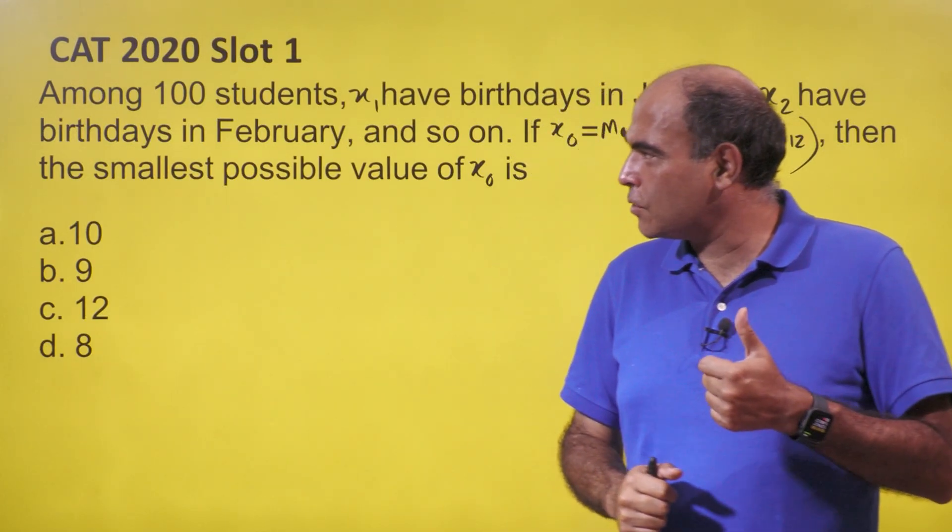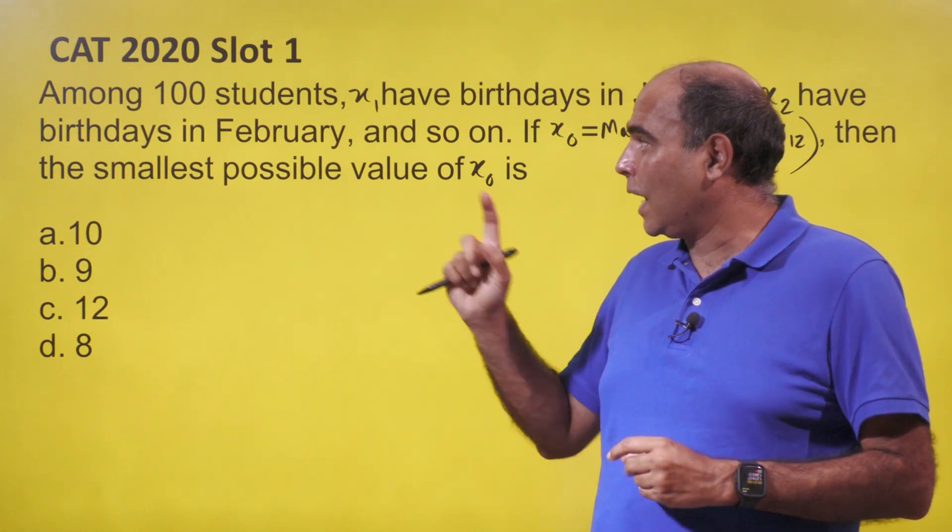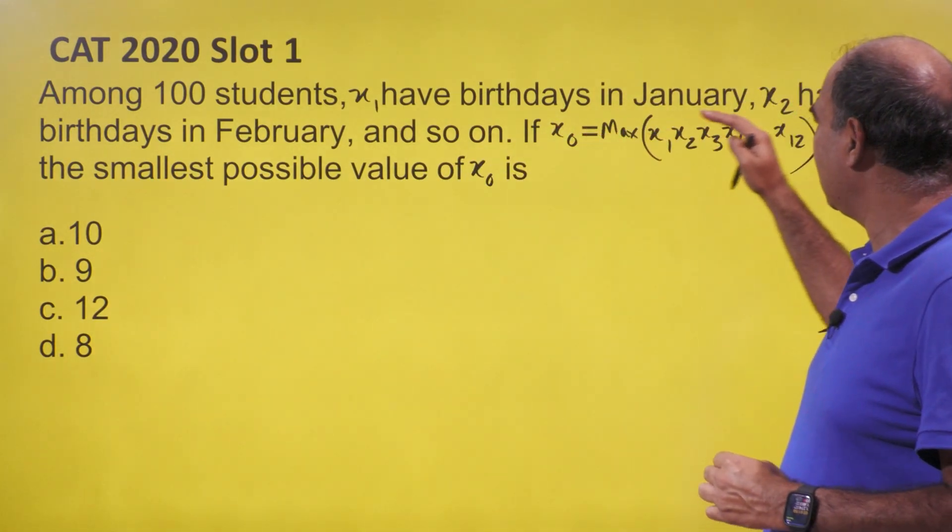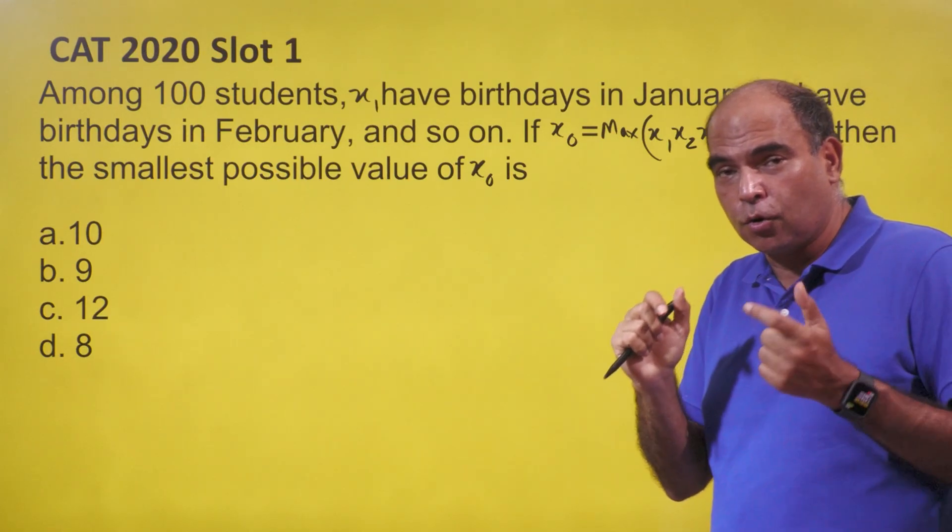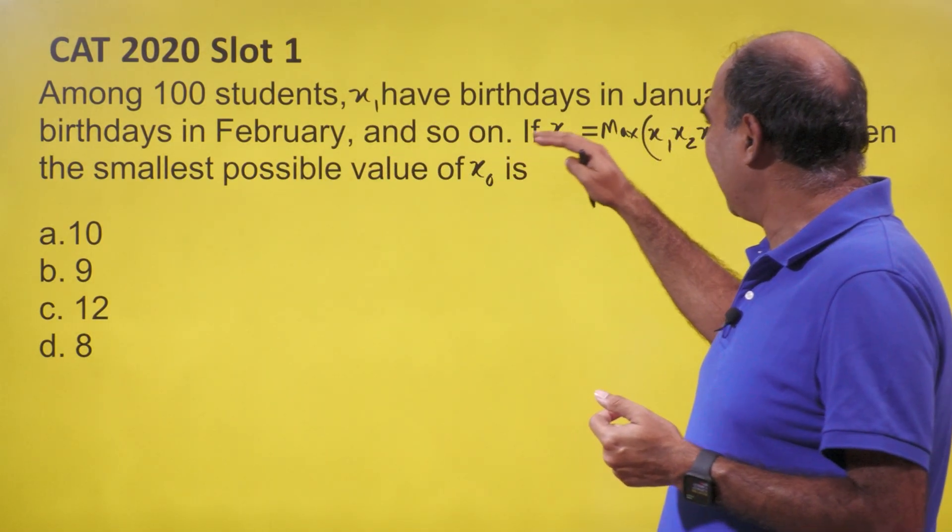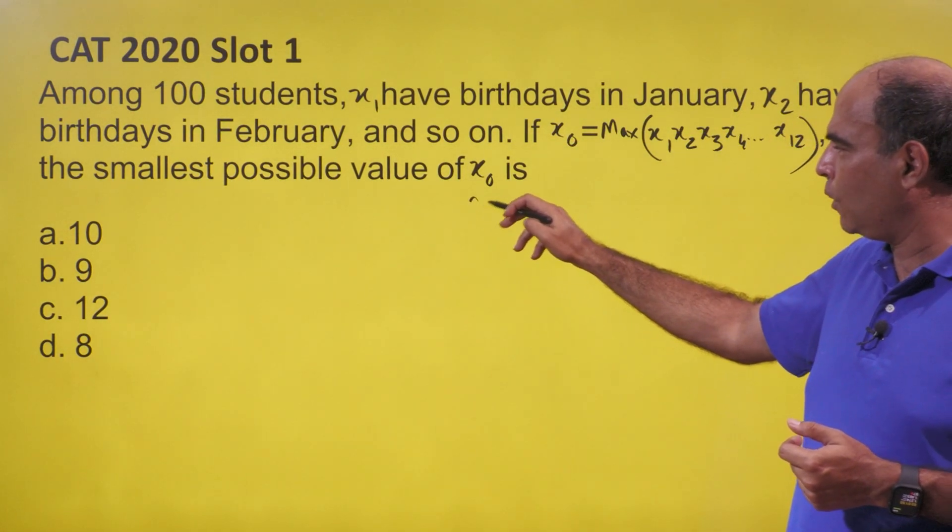Hey guys, welcome back to the 60 Second Solution Series - simplified solutions for real-time CAT questions. CAT 2020 Slot 1: Among 100 students, x₁ have birthdays in January, x₂ have birthdays in February, and so on. If x₀ is the maximum of x₁ to x₁₂, then the smallest possible value of x₀ is...